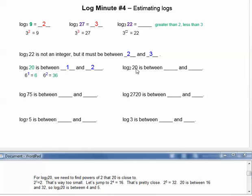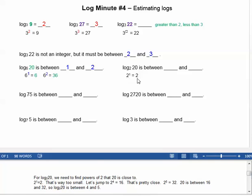For log base 2 of 20, we need to find powers of 2 that 20 is close to. 2 to the first equals 2, which is way too small. So let's jump up to 2 to the fourth, which equals 16. That's pretty close to 20. 2 to the fifth is 32. So log base 2 of 20 is between the exponents 4 and 5.